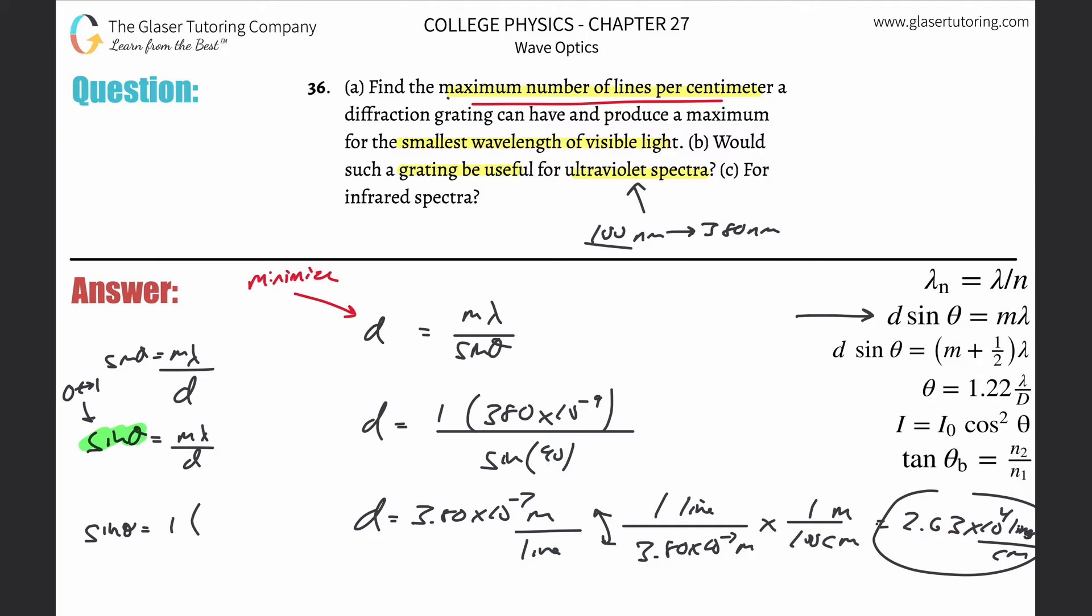Then divide that now by the d value we found before—that's the diffraction grating—3.80 times 10 to the minus seventh.